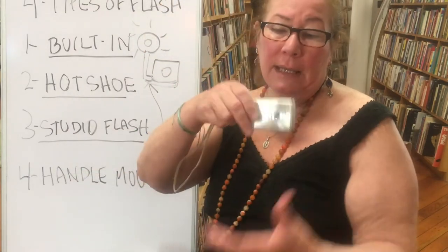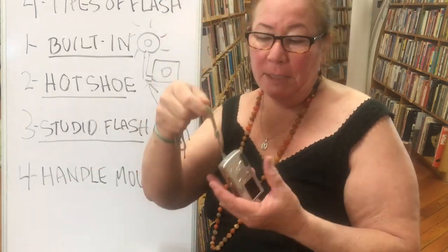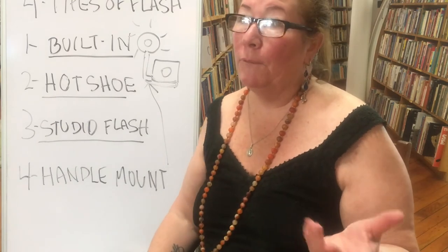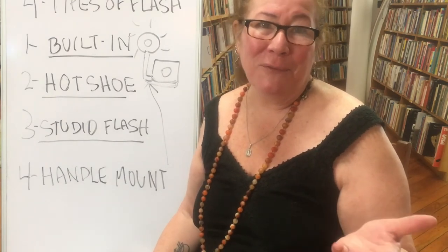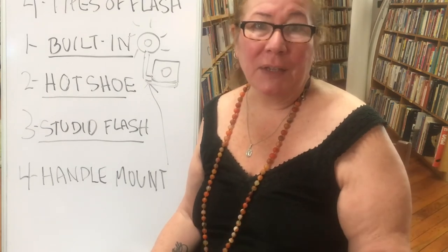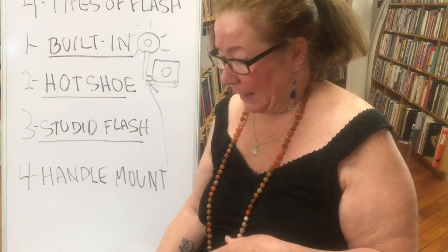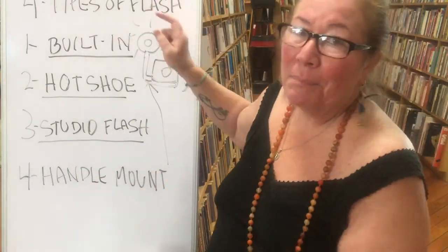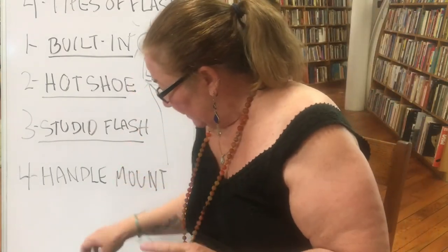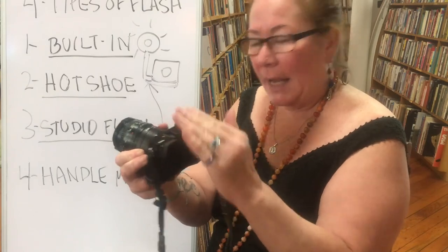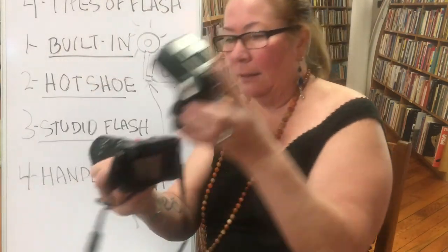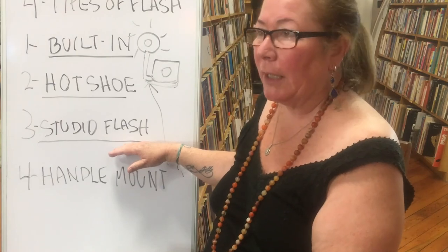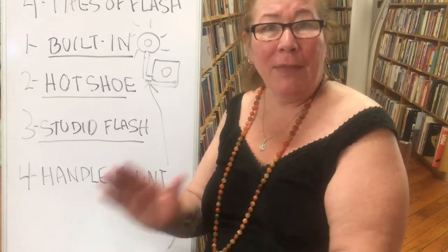The built-in flash is great — this camera is perfect for traveling and takes great pictures — though I probably wouldn't use the flash very often. Photo editing programs have tools to remove red eye easily, so you can fix it in post whether you're using a digital single-lens reflex or a small point-and-shoot. So that's it: four types — built-in, hot shoe, studio flash, and handle mount. See you in class!